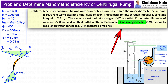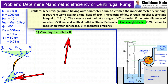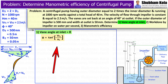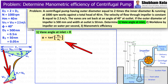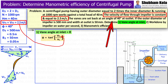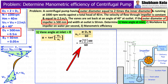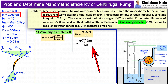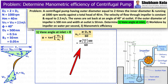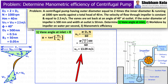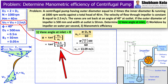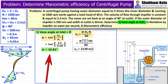First, we calculate the vane angle at inlet θ using the trigonometric ratio: tan θ = Vf1 / U1. The velocity of flow at inlet Vf1 = 2.5 m/s. U1 is calculated from the formula π D1 N / 60, where D1 is half of D2 = 0.5 m, and N = 1000 rpm. Substituting these values, U1 = 13.09 m/s. Using U1 and Vf1, the vane angle at inlet θ = 10.81 degrees.